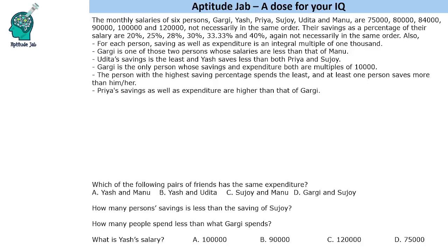Hello everyone, welcome to Aptitude Jab. This is a caselet — there are six people whose monthly salary is given, along with their saving percentage. It is also mentioned that for each person, savings as well as expenditure is an integral multiple of 1000. Using some additional information, we need to find out whose salary is how much, what percentage they save, and hence their savings and expenditure.